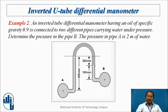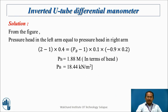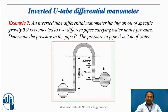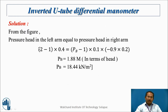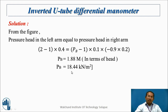Second problem: an inverted U-tube differential manometer with specific gravity 0.9 is connected to two different pipes carrying water. The values are given directly — put them into the equation. The pressure in the pipe is given as 2 meters head. Substituting all values, Pb is equal to 1.88 meters in terms of head of water, which is 18.44 kN/m².